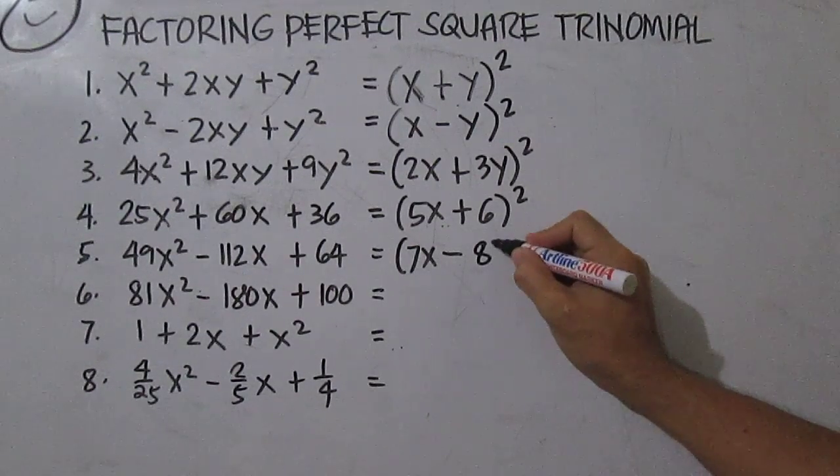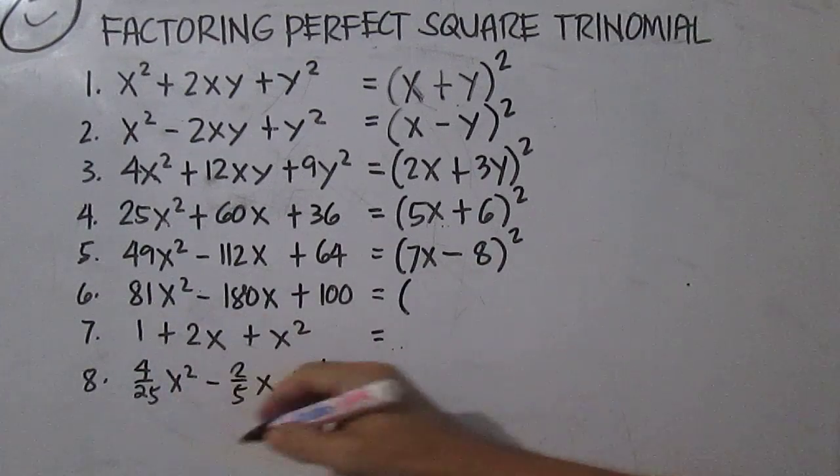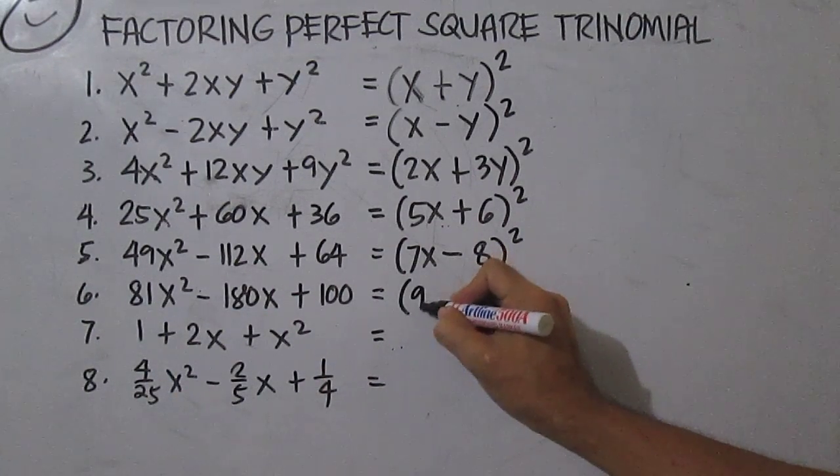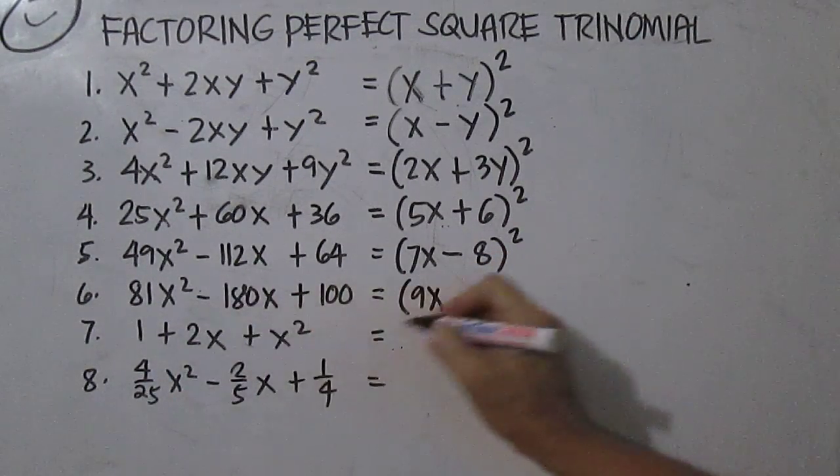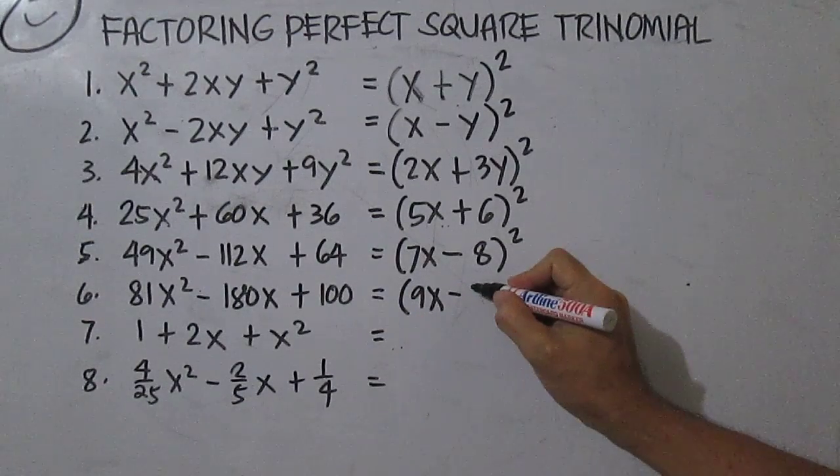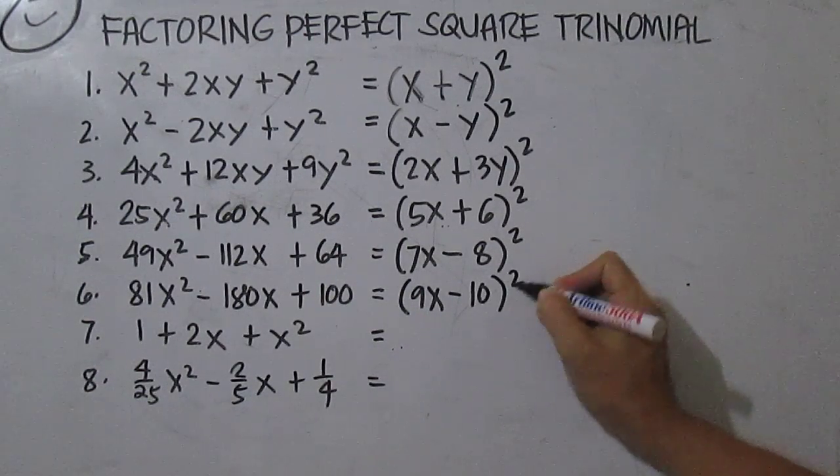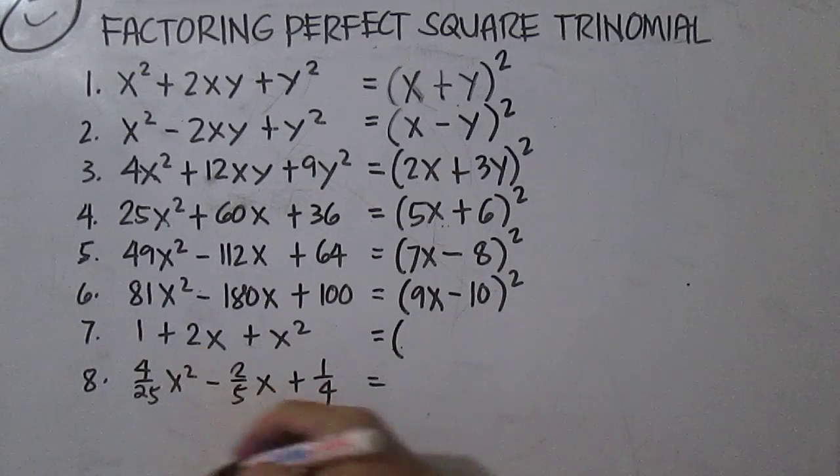is 8, then squared. For number six, the square root of 81x squared is 9x, minus the square root of 100 is 10, then squared. For number seven, you have the square root of